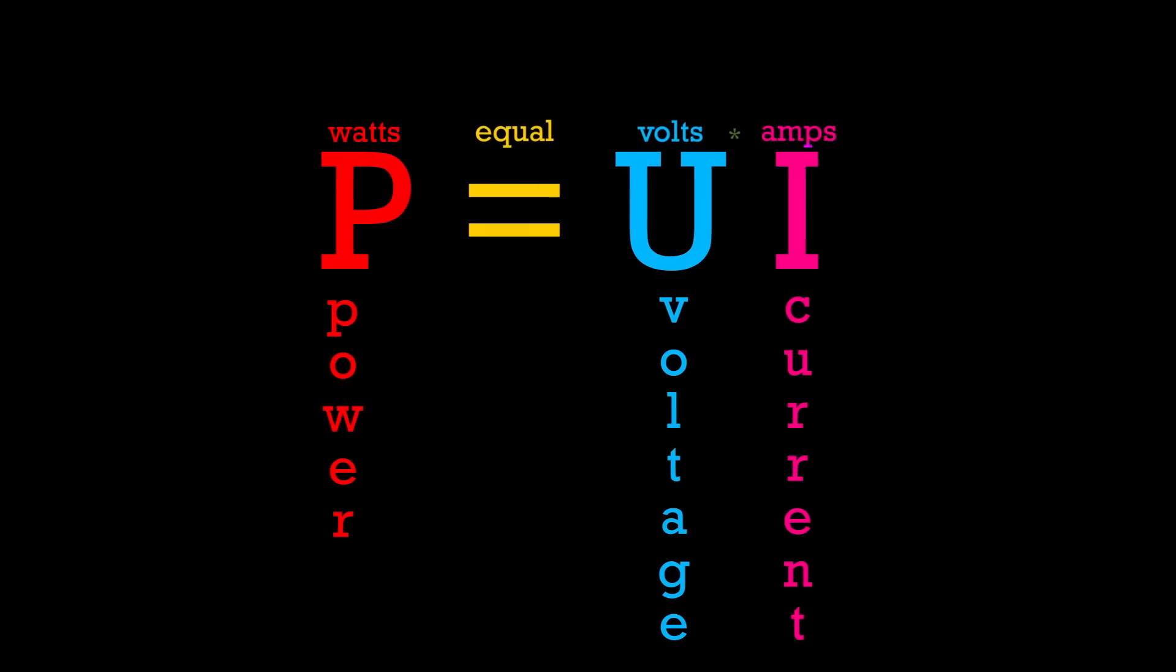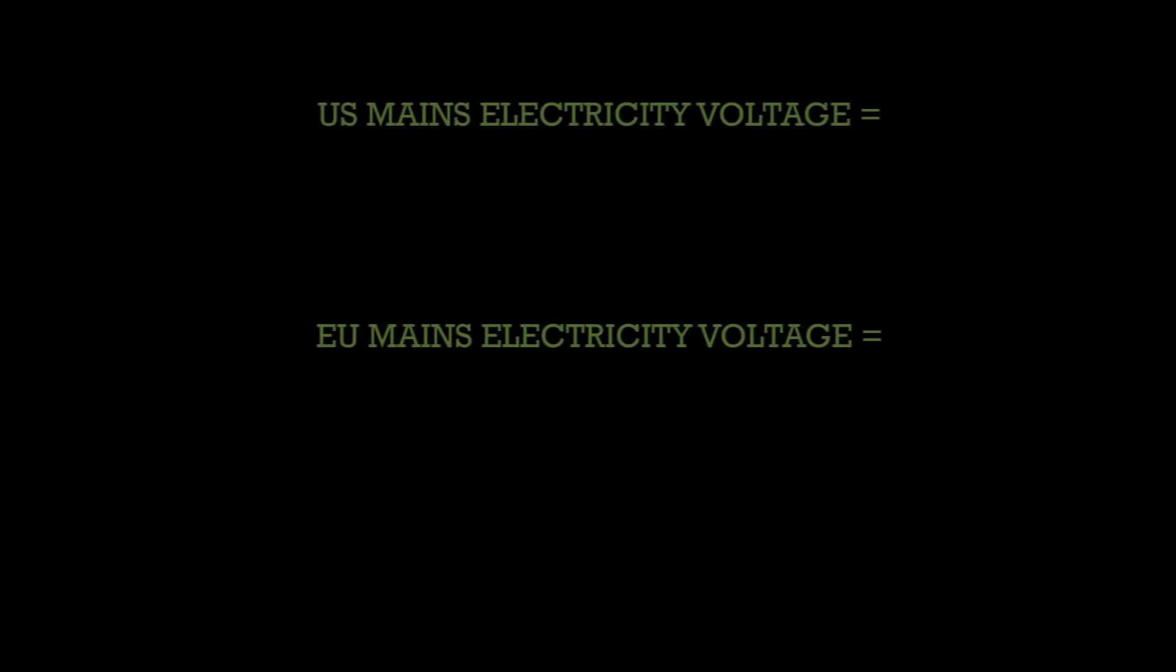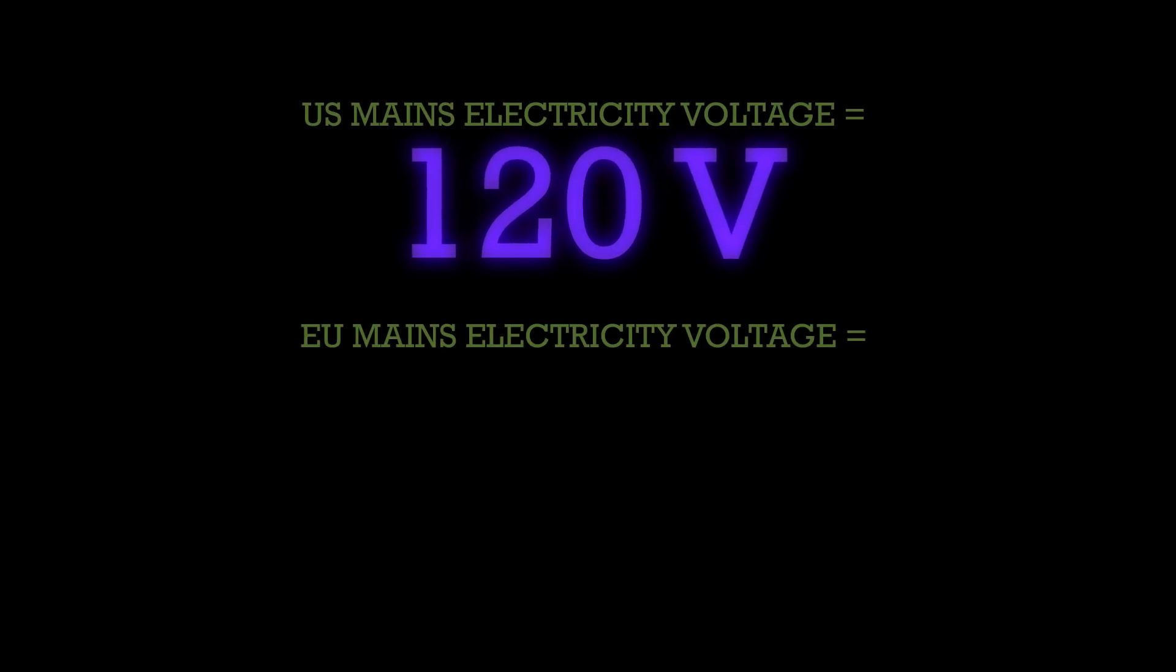Now let's fill in some numbers. We know that the voltage of U.S. mains electricity is 120 volts. The voltage of EU countries is usually 230 volts.